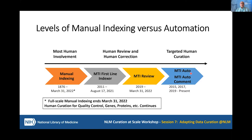One thing to note is that full-scale manual indexing ends actually tomorrow. But the human curation process for quality control of genes, proteins, and other items that MTI does not do well at is going to continue to ensure quality is maintained.